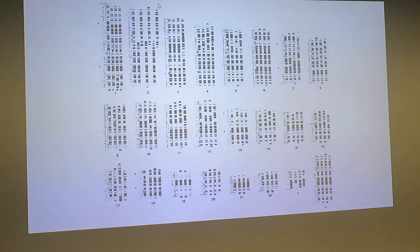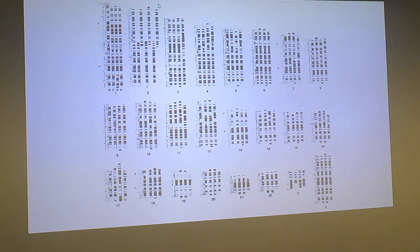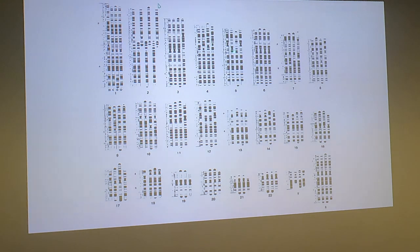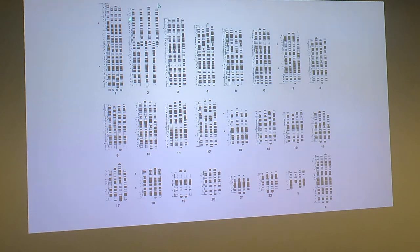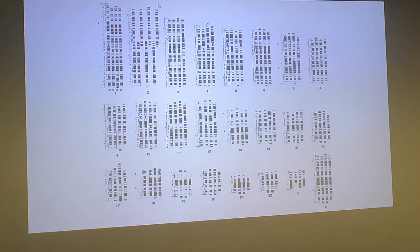As noted before, inversions usually don't cause serious damage to genes, but they do prevent crossing over in that region. Scanning around, you can find lots of examples — centromeres appear to be centers of various inversions. Here's an exciting one: chromosome 2.